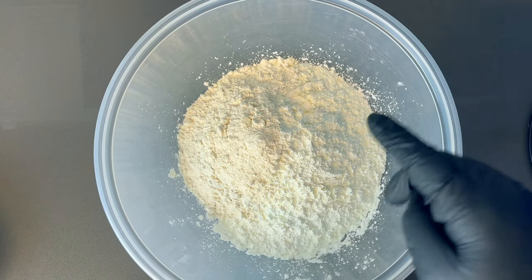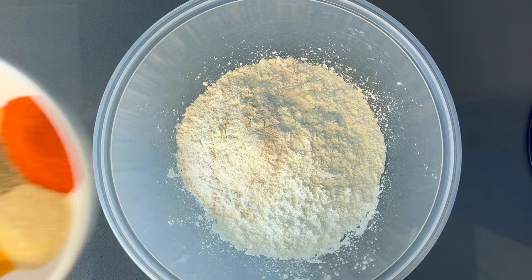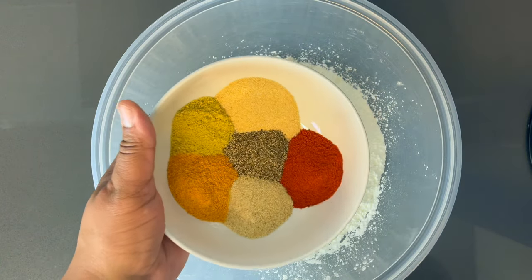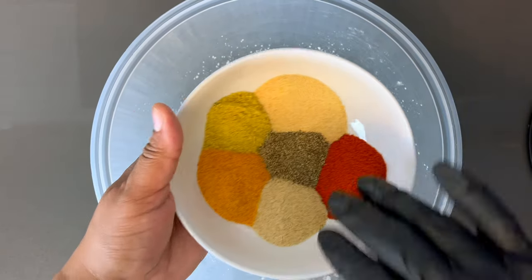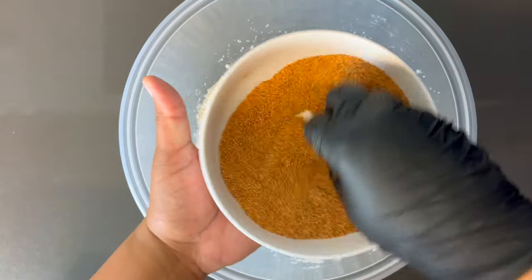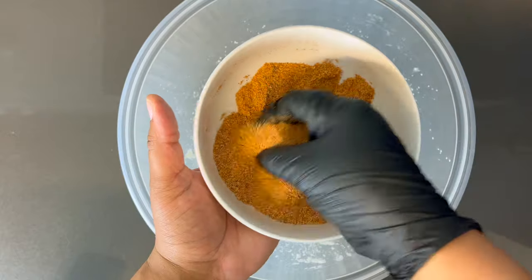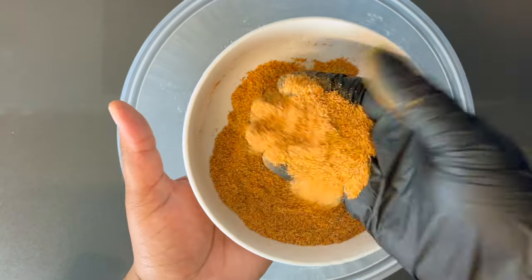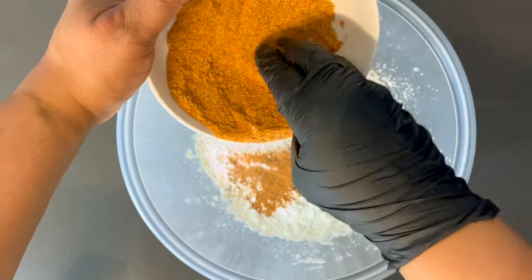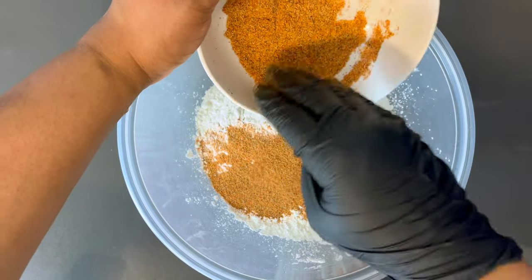In this bowl I have my three cups of flour and one cup of cornstarch. To that I'm going to be adding this special seasoning blend that I have. I'm just going to give that a mix and then we're going to add that in. This is the perfect blend.